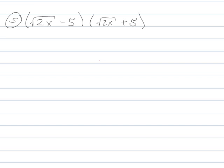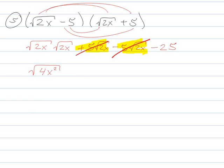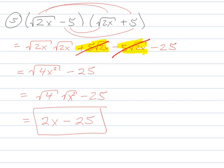Alright, so here again we're going to FOIL it. First: √(2x) times √(2x). Outer and inner: here there's a plus something and minus the same thing, so those are going to cancel out. And then 25 on the end. √(2x) times √(2x) is √(4x²). This is going to pull out to √4 times √(x²), which gives you 2x. So the final answer is 2x minus 25.